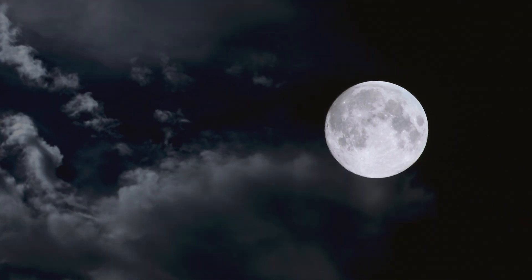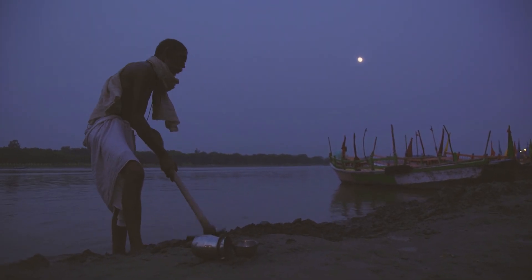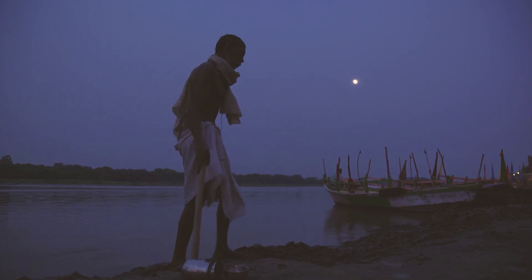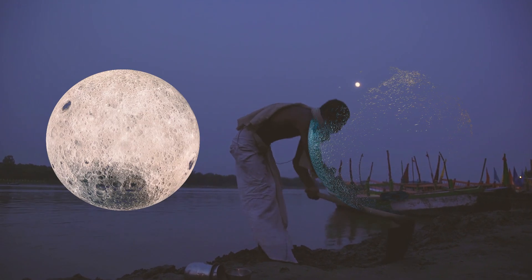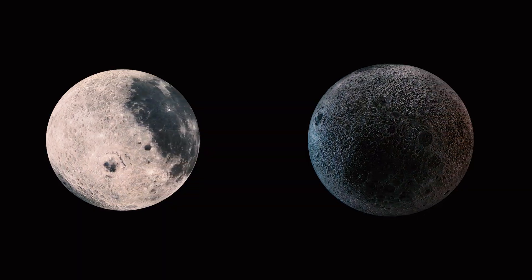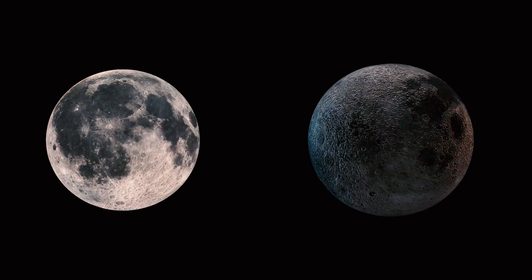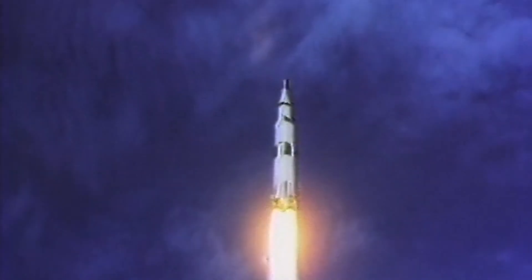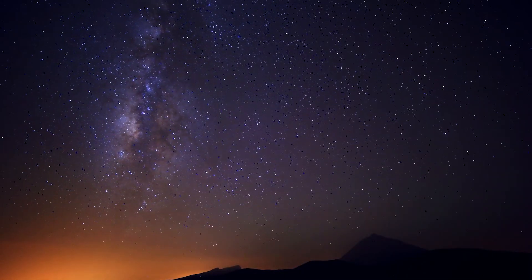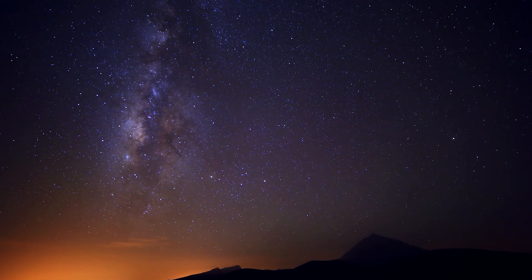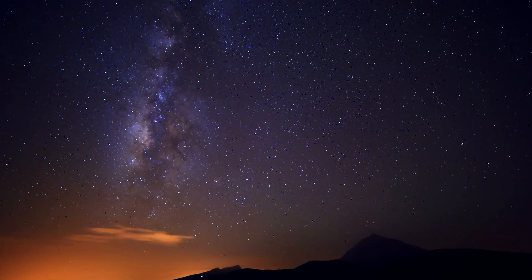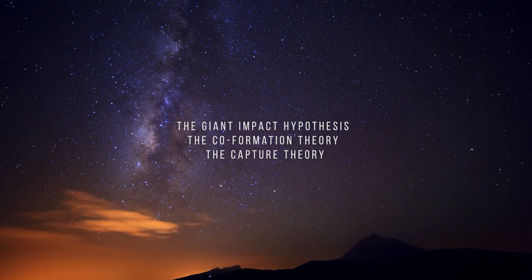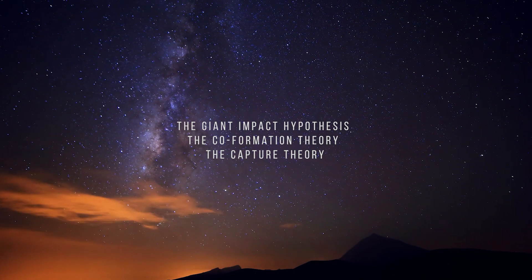The moon understands what it means to be human: uncertain, alone, cratered by imperfections. But how did the Queen of Darkness come about? Why is there a satellite of the Earth unlike many other planets? According to information from Apollo space research, after the Big Bang, it took another hundred million years for Earth's moon to spring into existence. There are three theories as to how our planet's satellite could have been created: the giant impact hypothesis, the co-formation theory, and the capture theory.